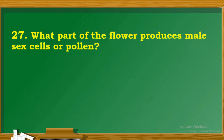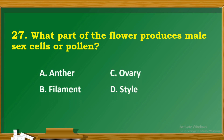Question 27: What part of the flower produces male sex cells or pollen? A. Anther. B. Filament. C. Ovary. D. Style.